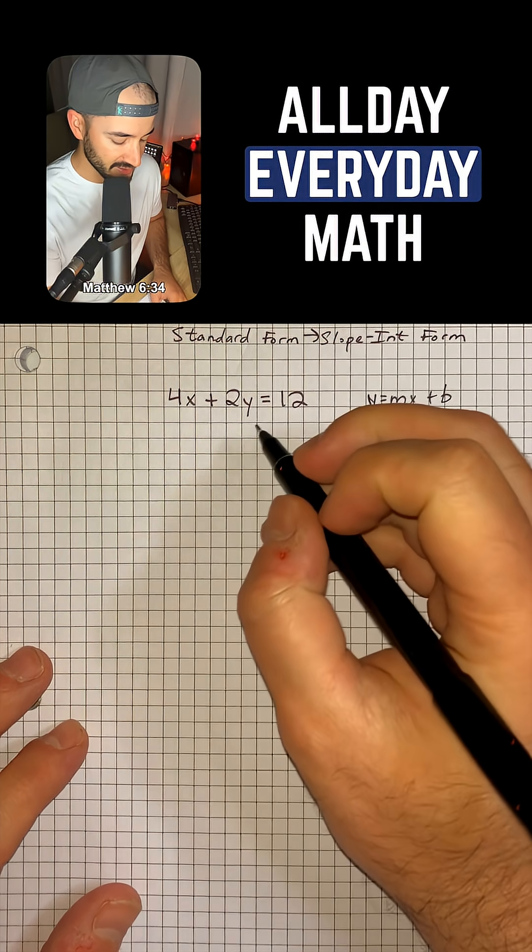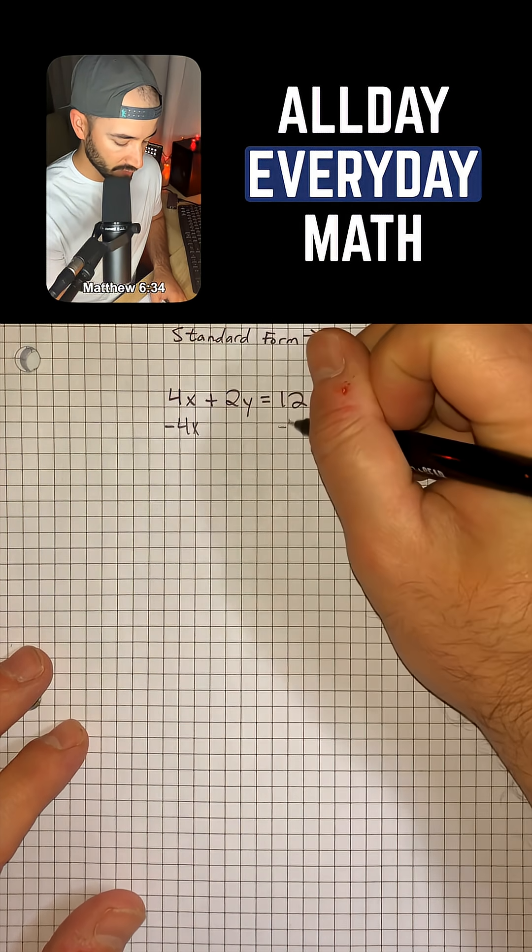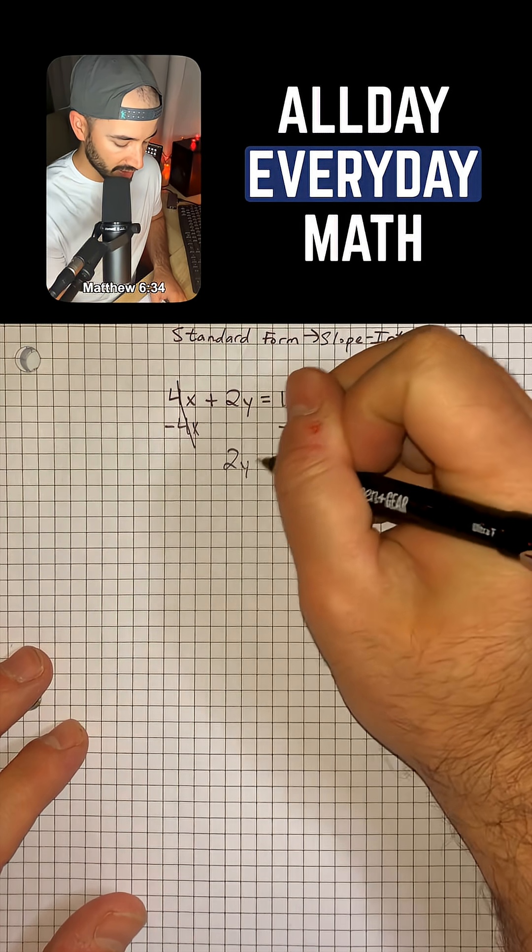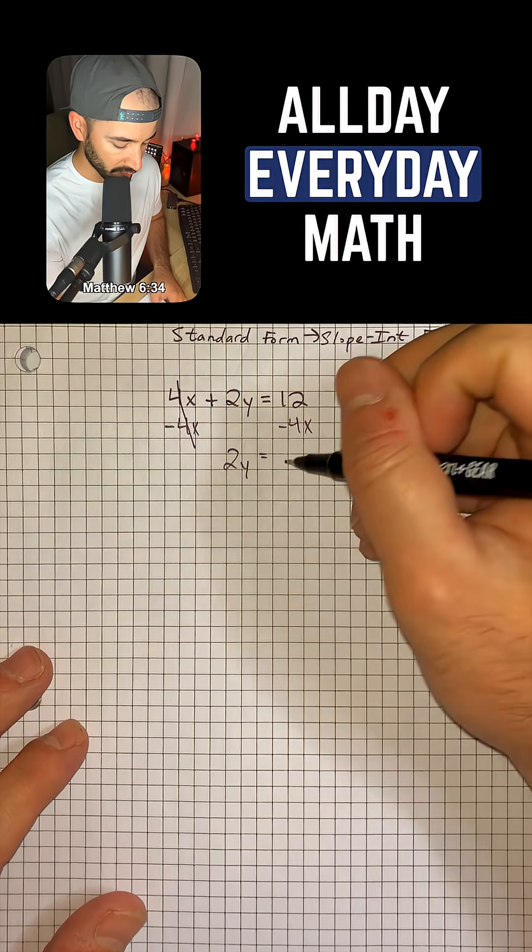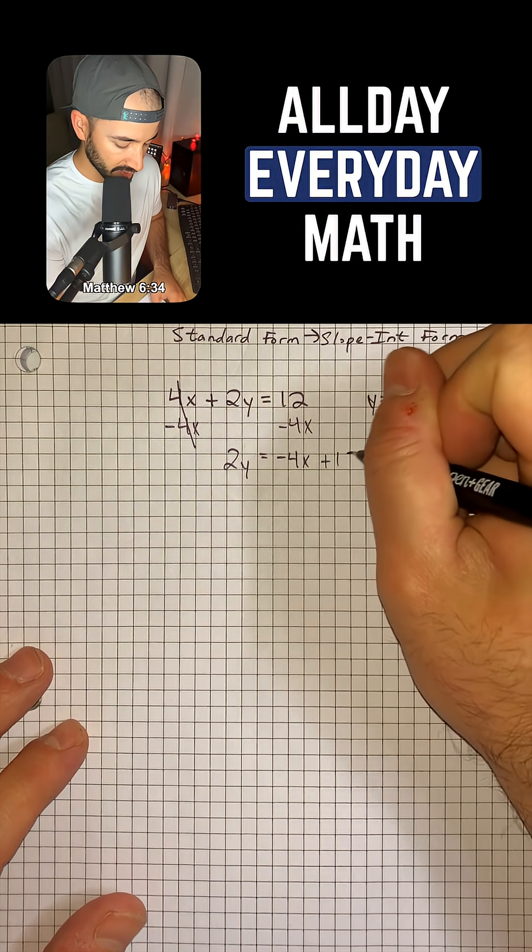Okay, so we want to get y by itself and we're going to do that by subtracting 4x from both sides so that the 4x's cancel and leave us with 2y = 12 - 4x, or -4x + 12.